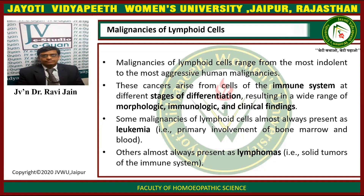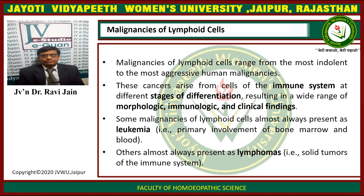Let's start with the malignancies of the lymphoid cells. The malignancies of the lymphoid cells range from the most indolent to the most aggressive human malignancies. These cancers arise from cells of the immune system at different stages of differentiation, resulting in a wide range of morphological, immunological, and clinical findings. Some malignancies of lymphoid cells almost always present as leukemia, i.e. primary involvement of the bone marrow and blood, while others almost always present as lymphomas, i.e. solid tumors of the immune system.